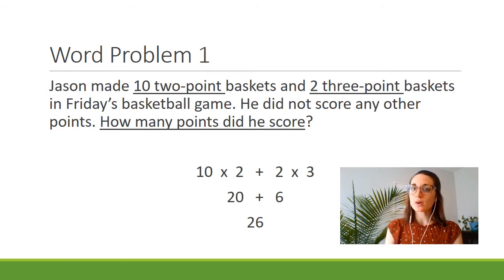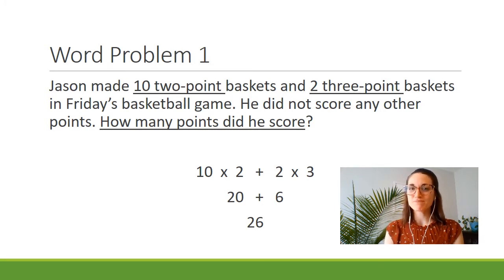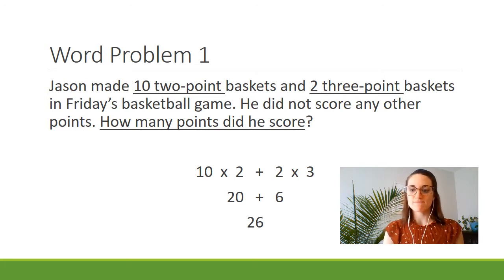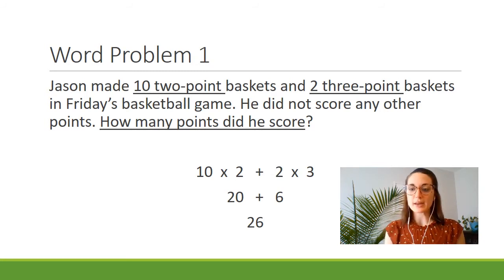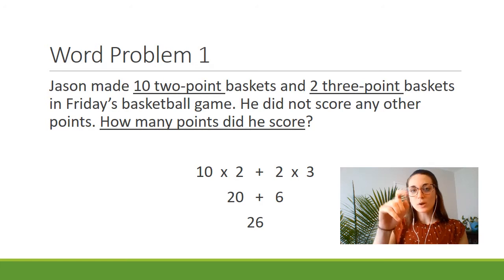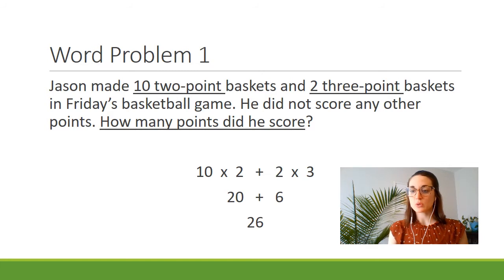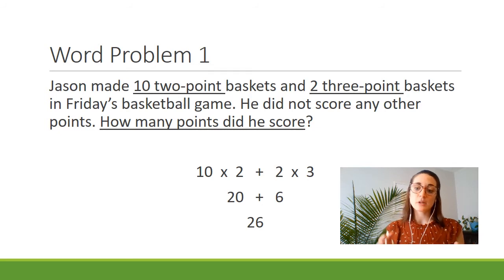We'll have to use the order of operations — we have a video about that on the Helms Academy YouTube channel if you'd like to review. Just as a reminder, we'll have to do the multiplication before we do the addition. So let's start by doing all of our multiplication in the problem in order from left to right. Ten times two is twenty, so we replace that with twenty on the next line. We pull down the addition sign, then do two times three, which is six. Now we have twenty plus six, which means our final answer is twenty-six.